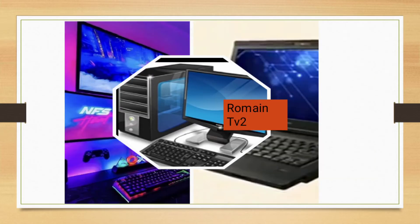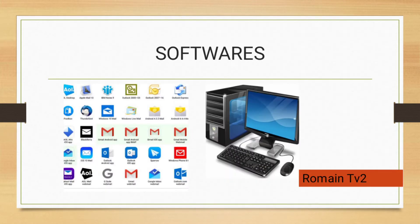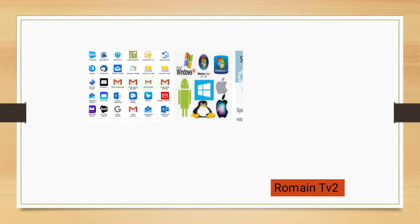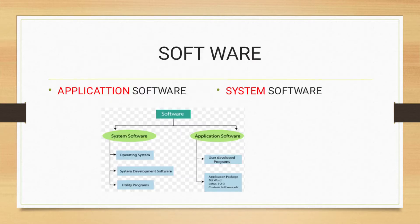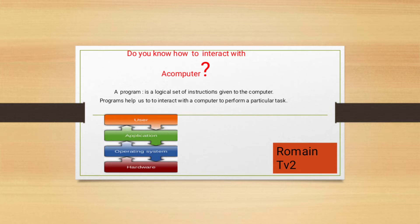Welcome again to Lomani TV 2. Software is classified into two types: application software and system software. System software includes operating system, system development software, and utility programs. Application software includes user development programs and application packages like MS Word.